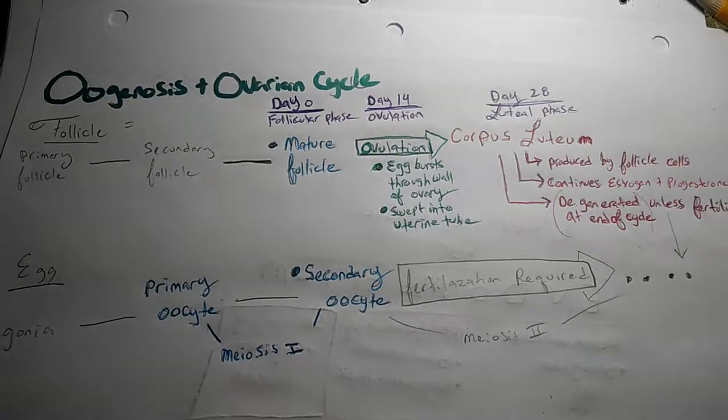We have here the reproductive system, particularly for the reproduction. It will include the female reproductive system, part D, oogenesis.